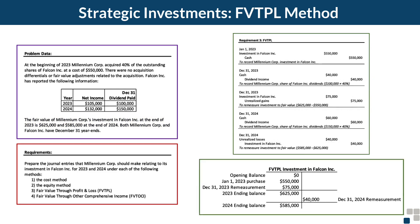Here's what the T-account looks like for the FVTPL investment. Beginning balance is zero, then the acquisition on January 1st, 2023 of $550,000, followed by a debit of $75,000 for the 2023 remeasurement, resulting in an ending balance of $625,000 at the end of 2023 — which equals the fair value at that time. On December 31st, 2024, there's a credit to the investment account for $40,000 representing the unrealized loss, bringing the ending balance to $585,000, which is the fair value at that point.